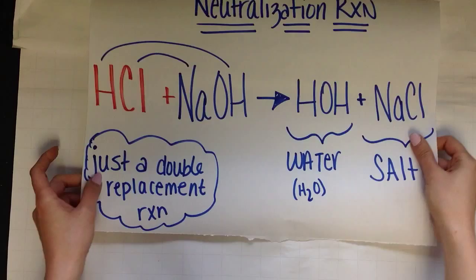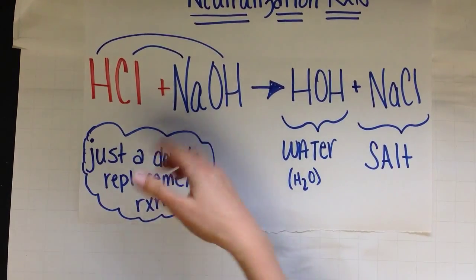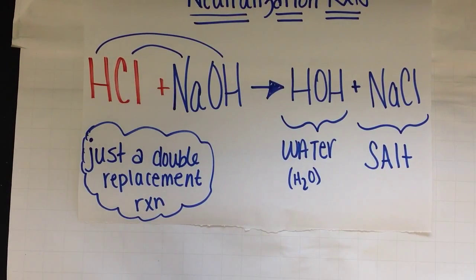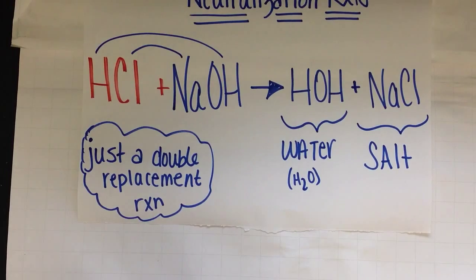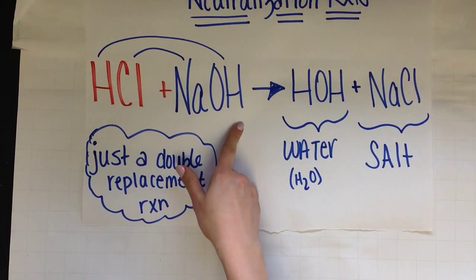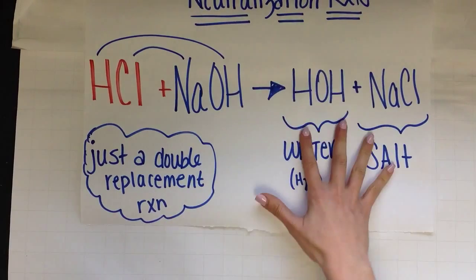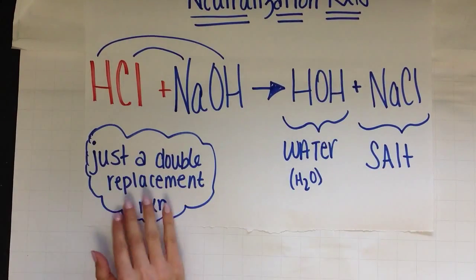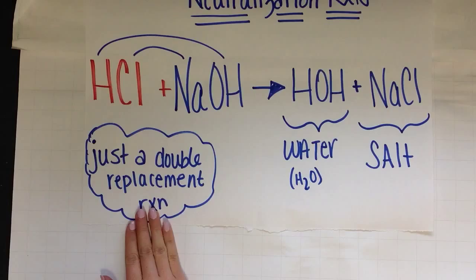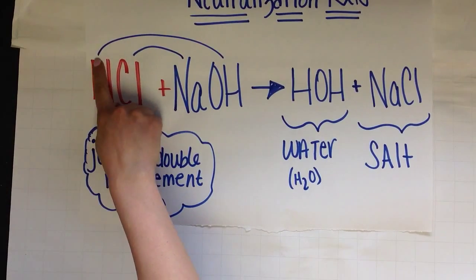And if we look here, whenever we add an acid to a base, we know that we can neutralize it that way. We've learned this in lab safety. So here we have hydrochloric acid and sodium hydroxide. How do we know what our products are going to be? Well, this is just a double replacement reaction. So this is back to the good old rainbow, right?